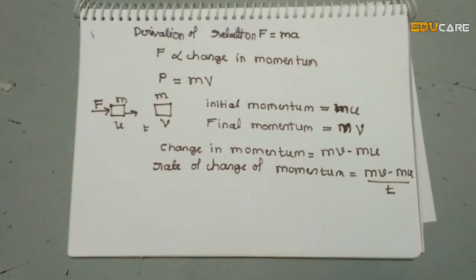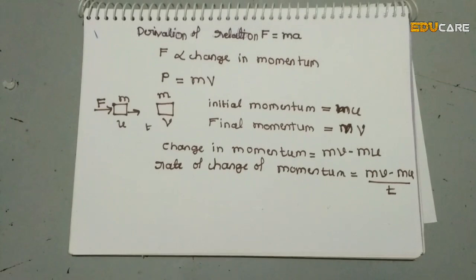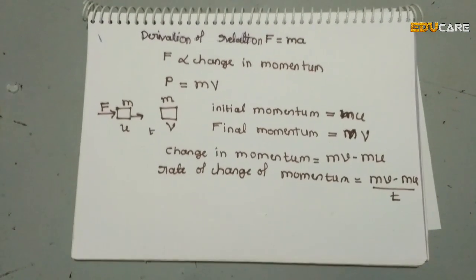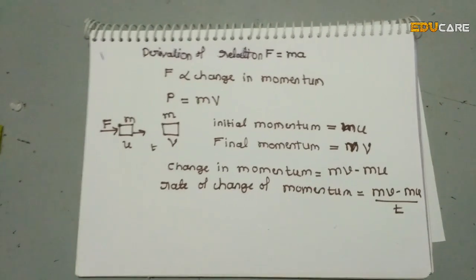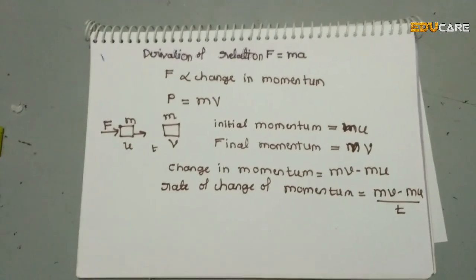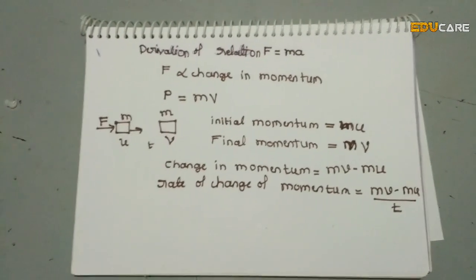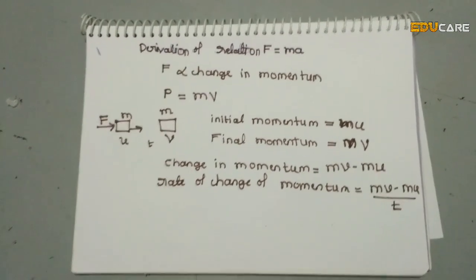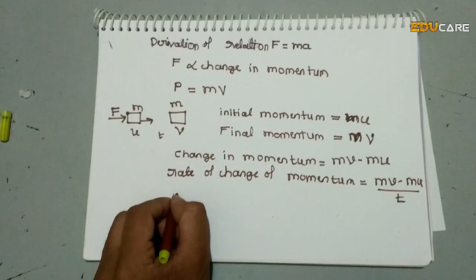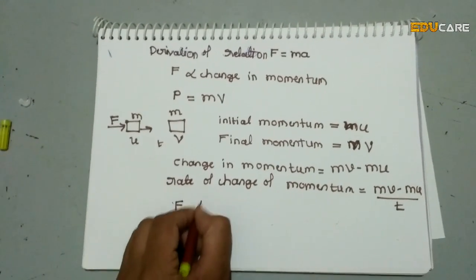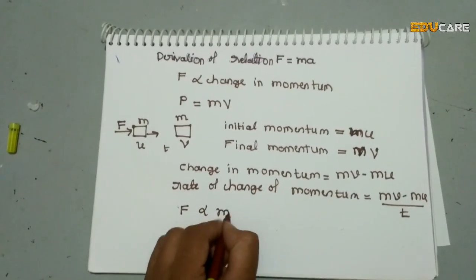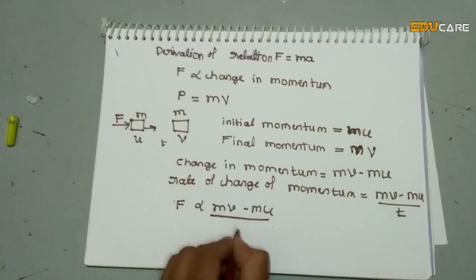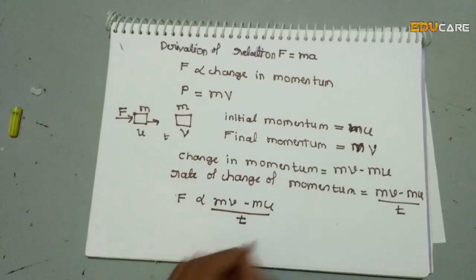From Newton's second law, the rate of change of momentum is directly proportional to the external force acting on it. We consider the external force equal to f. Then, f is directly proportional to m·v minus m·u divided by t, which can be written as f is directly proportional to m into (v minus u) divided by t.